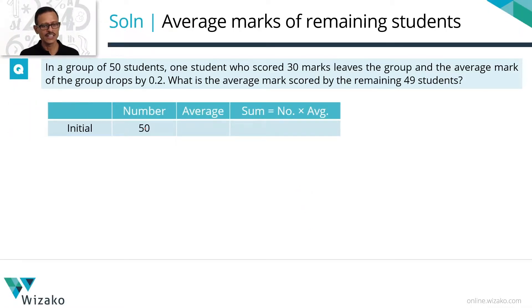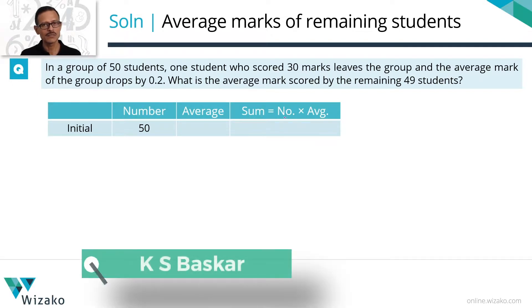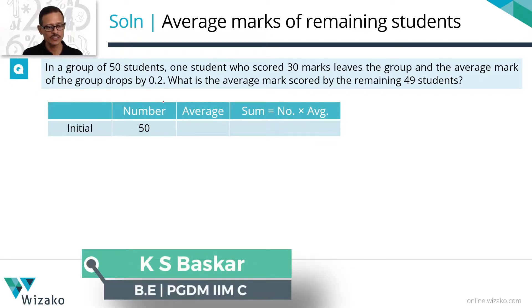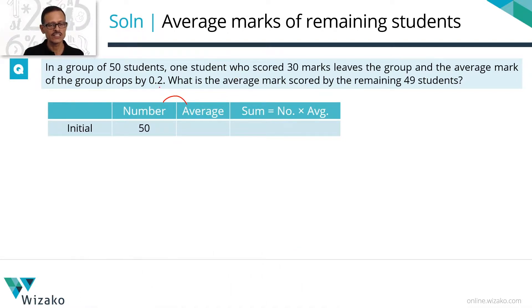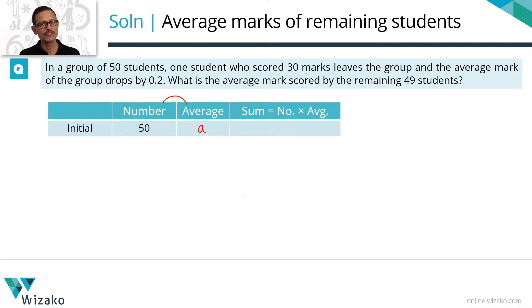The standard framework has three columns: number, average, and sum. Sum is nothing but the product of number and average. Initially there are 50 students. Do we have information about the average marks of those students? Obviously no. Since they haven't given us that average, let's assign a variable to it. Let's say the average marks of the 50 students is A. So the sum of their marks is 50 times A.